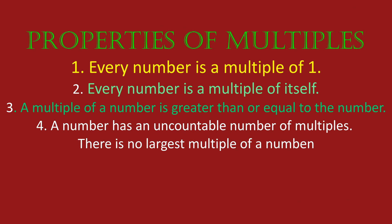Here are the properties of multiples. Property one — every number is a multiple of 1. Property two — every number is a multiple of itself. Property three — a multiple of a number is greater than or equal to the number. Property four — a number has an uncountable number of multiples. There is no largest multiple of a number; it is an endless number.